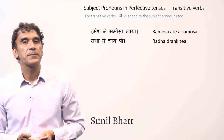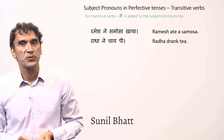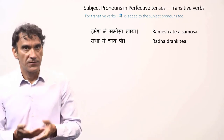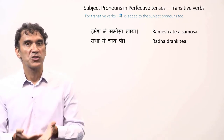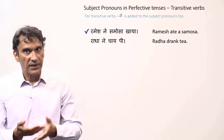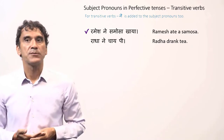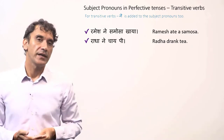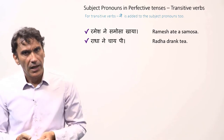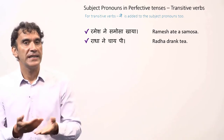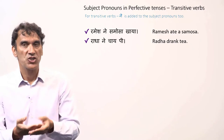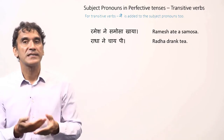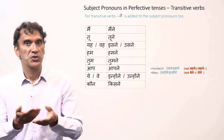The next grammar point is the subject with the postposition 'ne'. We know that the subjects in the perfective tenses of the transitive verbs take the postposition 'ne'. For example, 'Ramesh ne samosa khaya' — Ramesh ate samosa. 'Radha ne chai pi' — Radha drank tea. Both Ramesh and Radha take the postposition 'ne'. Similarly, subject pronouns also take the postposition 'ne'.